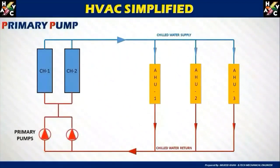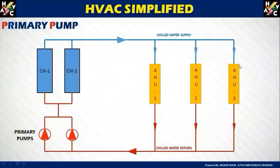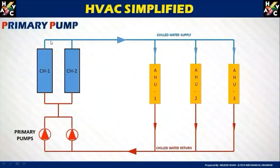Here you can see, this is a primary pump system. One chiller and two chillers depending on the requirement, and AHUs and coil units depending on the system requirement. Here you can see the primary pumps connected to the chiller — this is the complete system to run.